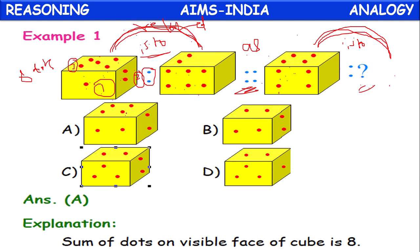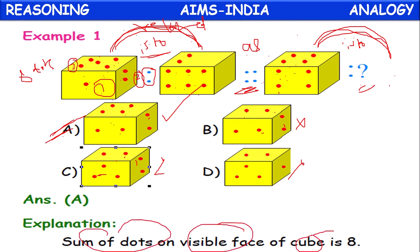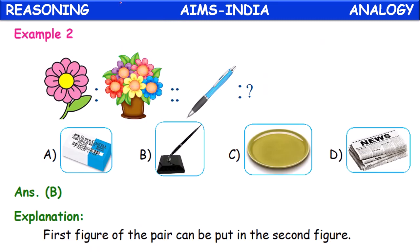Checking the options: Option A has eight dots — correct. Option B has only six dots — wrong. Option C has seven dots — wrong. Option D has six dots — wrong. So only option A has eight dots, like pictures one and two. In three and four also, the same relation should exist. Since three has eight dots, the fourth figure should also have eight dots. Option A is the answer because the sum of the dots on visible faces of the cube is eight.